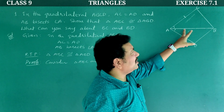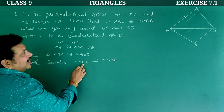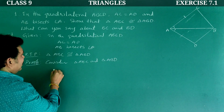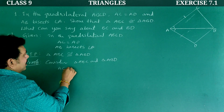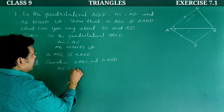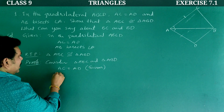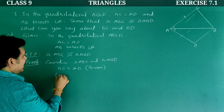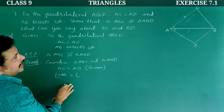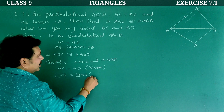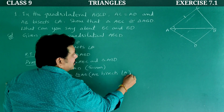According to side-angle-side congruency, triangle ABC is congruent to triangle ABD. Let us write formally. In two triangles, triangle ABC and triangle ABD: AC is equal to AD — given. Next, angle CAB is equal to angle DAB because AB bisects angle A. Next, AB is equal to AB — common for both triangles.